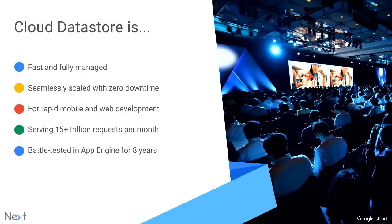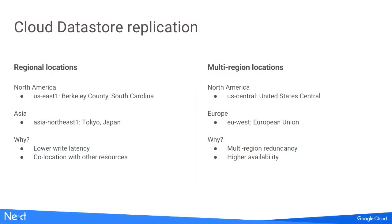Cloud Datastore's real strong point is being a fast, fully managed solution that scales from zero to millions of requests per second without changing any configuration, worrying about adding nodes, or having any downtime to add capacity. It literally scales from a single machine to 10,000 machines without you doing anything. Under this operational simplicity is a really sophisticated, synchronously replicated database. We give you two flavors of replication: regional locations operate a multi-zone replicated system, while multi-region locations replicate across distinct geo-regions.